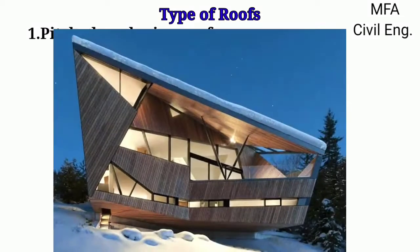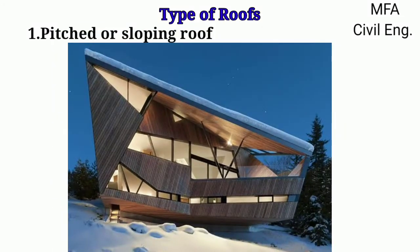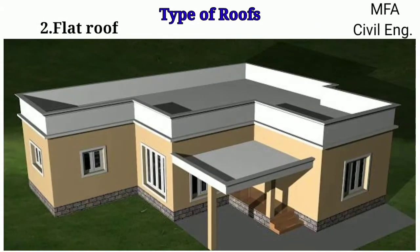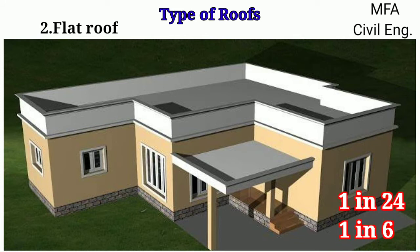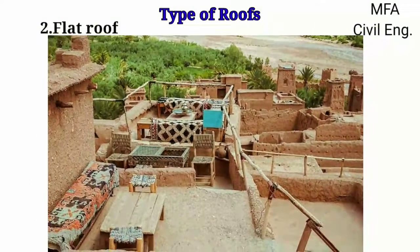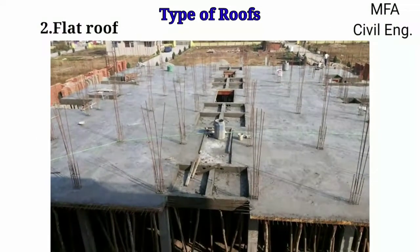The inclination of a roof depends on the climate condition and the type of roof covering material. Flat roof is a roof which has an angle to the horizontal of less than 10 degrees. They are generally constructed at a slope of 1 in 24 to 1 in 6 in one or more directions from the center of the roof to drain off rain water efficiently. Flat roofs can be constructed using a mud terrace roof, brick concrete terrace roof or reinforced cement concrete roof.